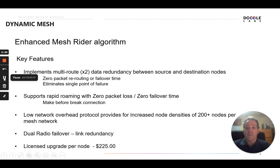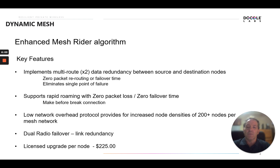Now let's take a look at dynamic mesh. Dynamic mesh is an enhanced algorithm — the mesh rider algorithm — that allows us to implement some key features. One of the key features is multi-route two-data redundancy between source and destination nodes. A node will generate two data streams redundantly to its two adjacent neighbors on route to the destination. One stream is determined to be the primary based on least cost routing; the other becomes secondary. Should the primary be interrupted, the secondary stream has packets already present, and there'll be zero packet rerouting or failover time. This also eliminates single point of failure.